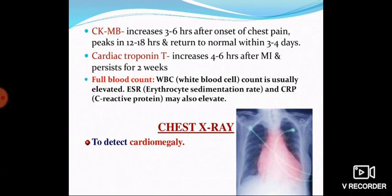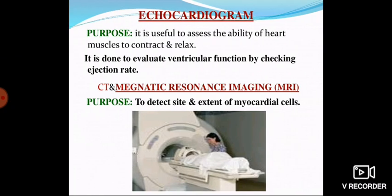The second cardiac marker is cardiac Troponin T. Its level is detectable for 4 to 6 days after myocardial infarction onset and may remain elevated for up to two weeks. Full blood count — WBC (white blood cell count) — is usually elevated. The erythrocyte sedimentation rate (ESR) and C-reactive protein (CRP) may also be elevated.